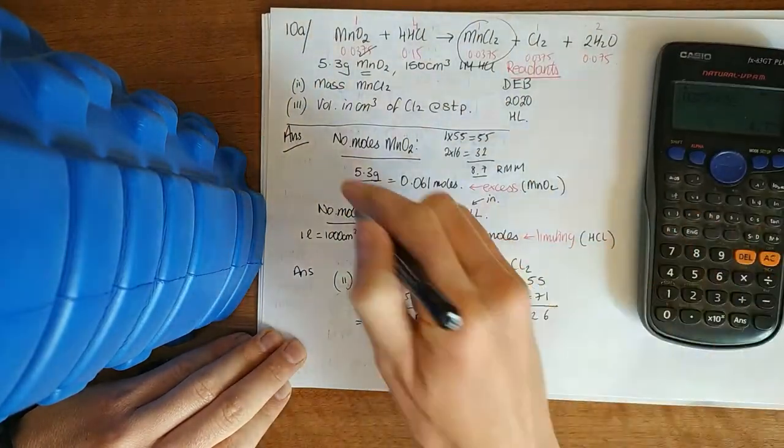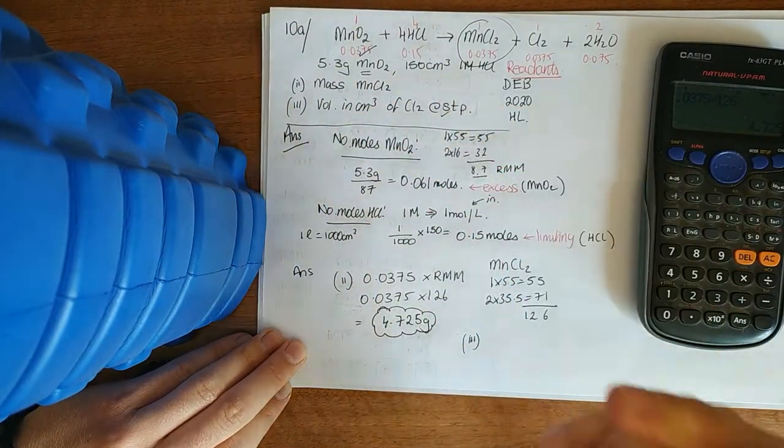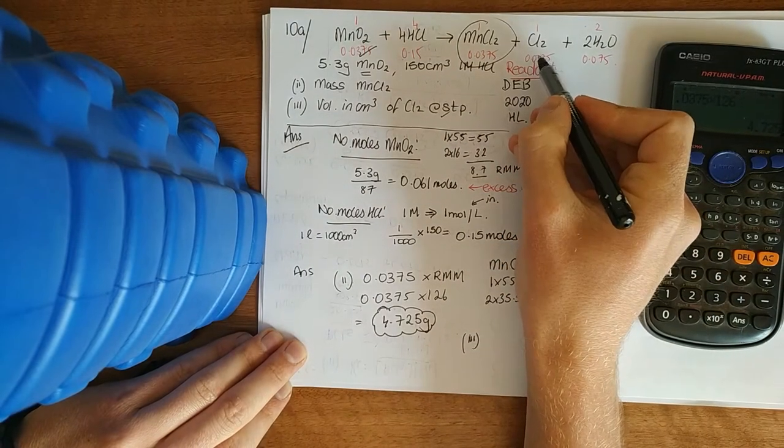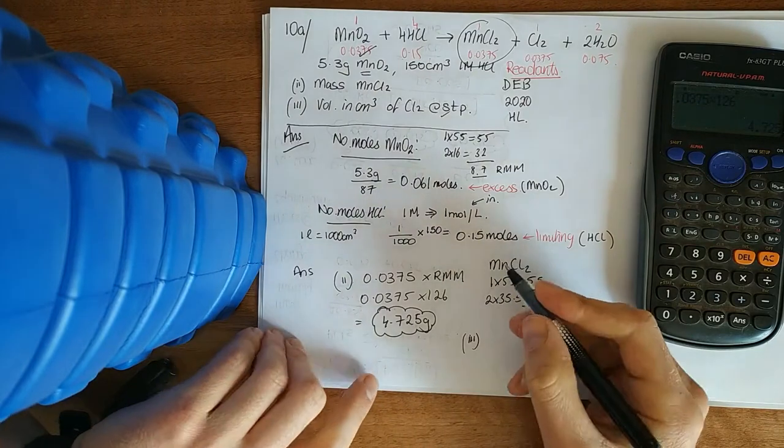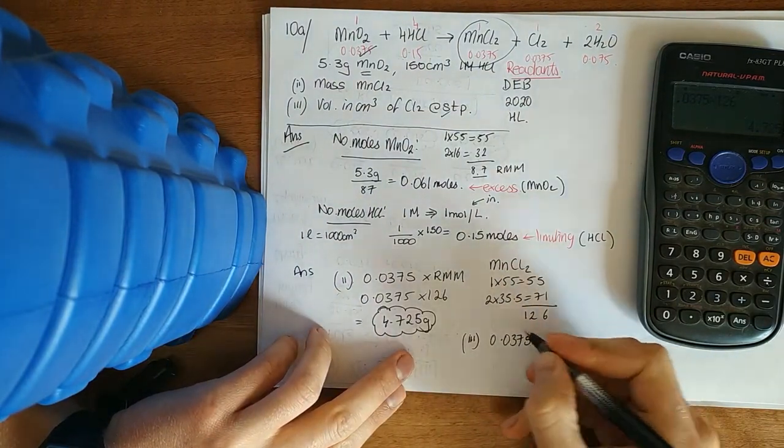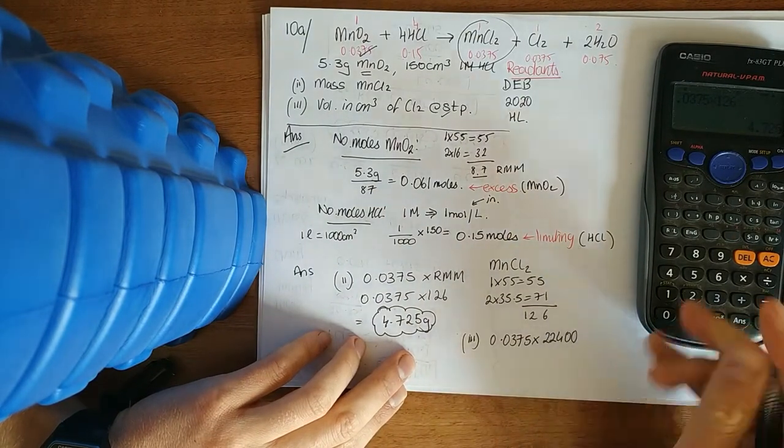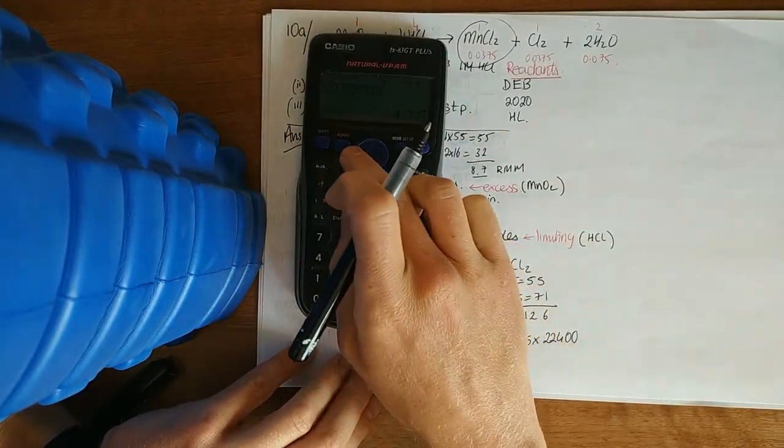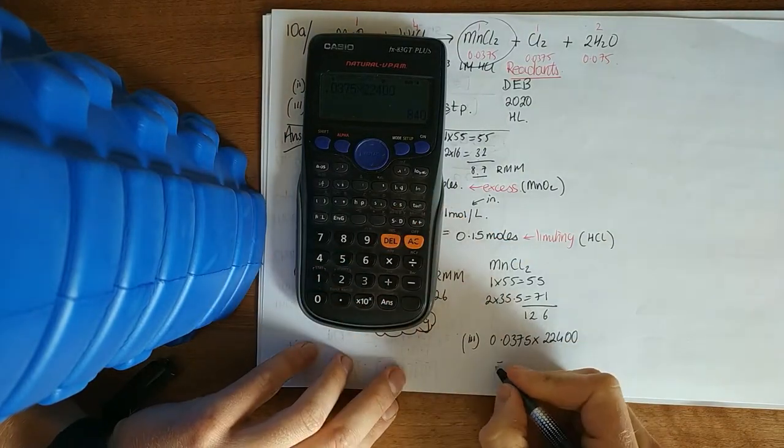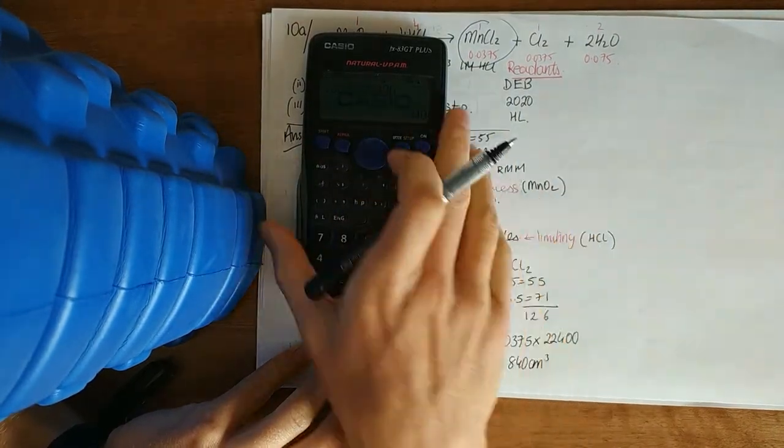And then the last one there. The volume in centimeters cubed. Just be careful on this. It's at STP. Just keep a wee eye out for room temperature and pressure as well. Of Cl2. Again, we've got the number of moles of that. When we're leaving moles we're multiplying. And centimeters cubed at standard temperature and pressure is 22,400. 0.0375 by 840 centimeters cubed. So that was 10A.